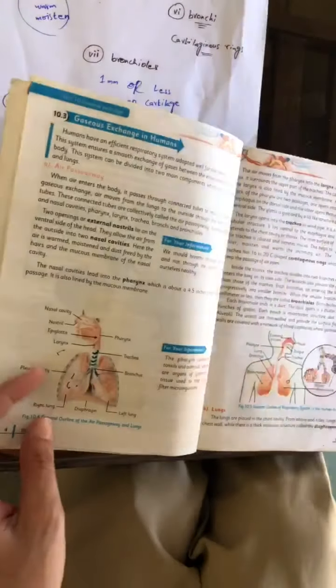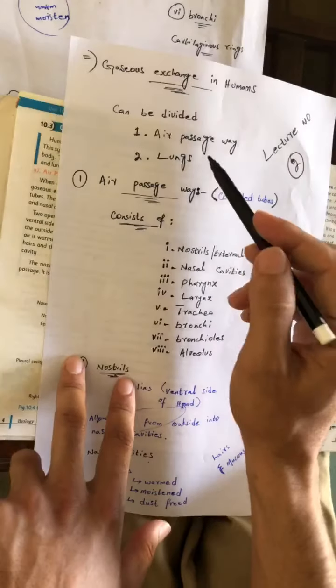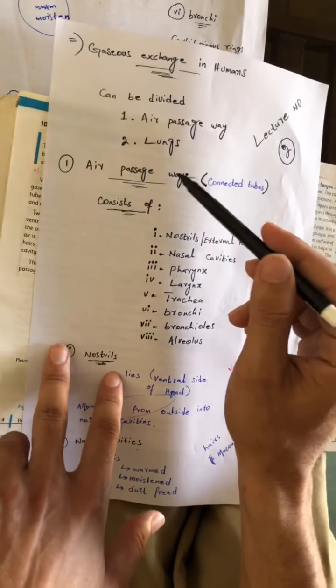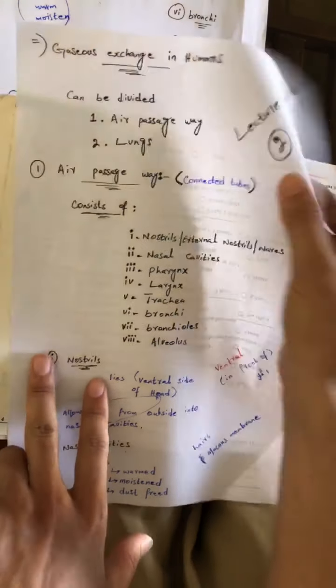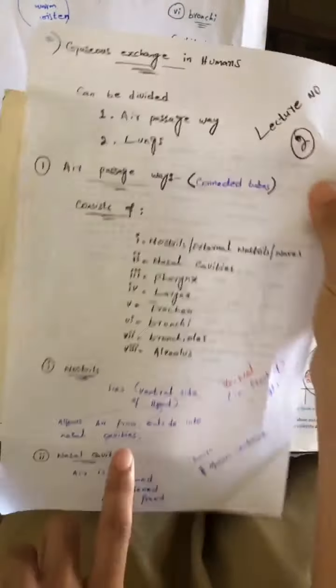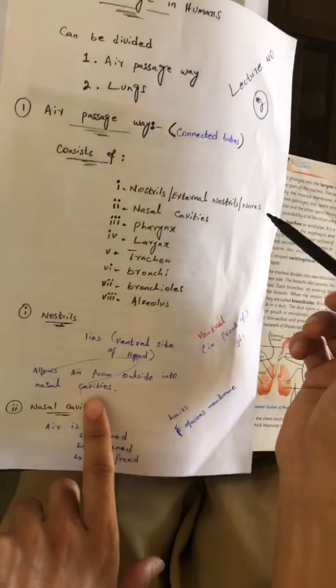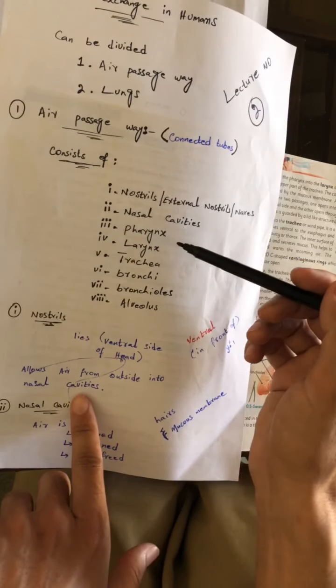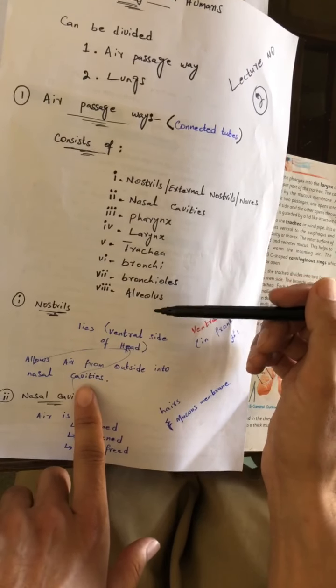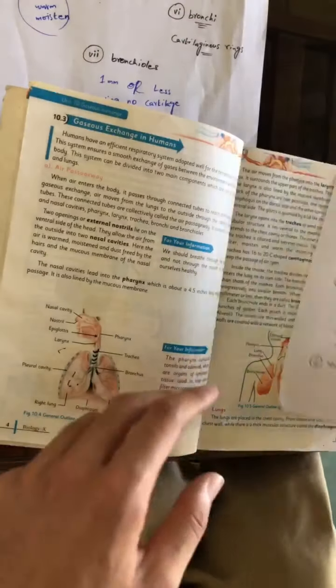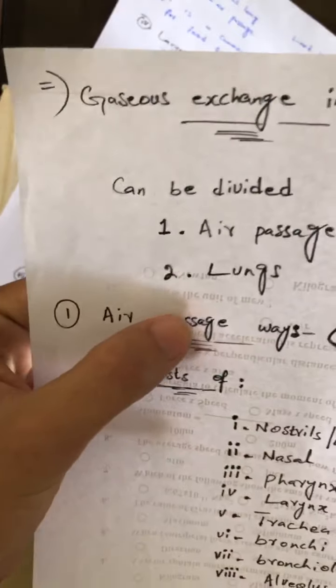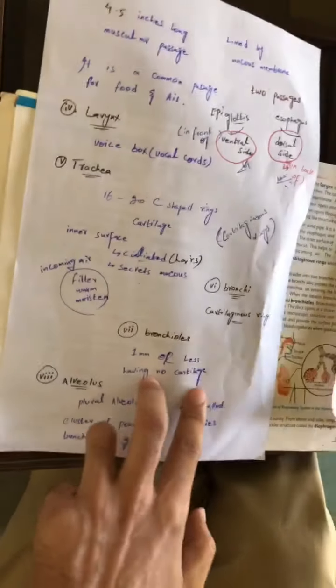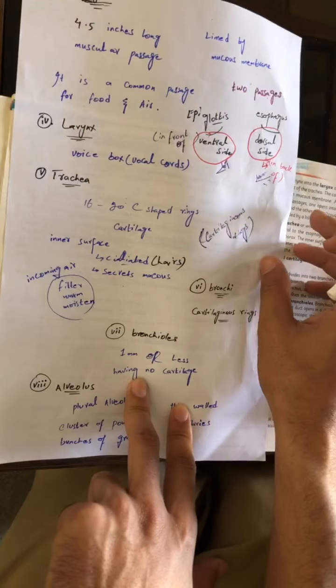So I have told you that we have two parts of the gas exchange: the first one is the air passageways, while the second one is the lungs. In this lecture, we have studied the nostrils, nasal cavities, pharynx, larynx, trachea, bronchi, bronchioles, and alveoli. In the next lecture, we will study the lungs, which is the second portion. I hope you understand the topic. Assalamualaikum.